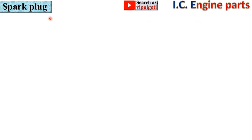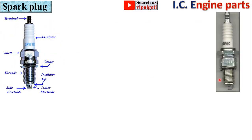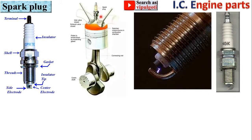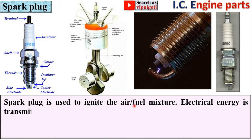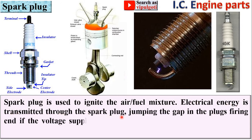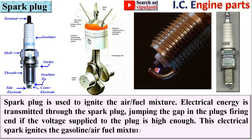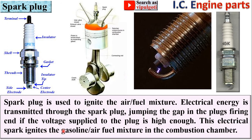Next part: spark plug. This is the image of the spark plug and this figure shows the location of the spark plug in the engine. The spark plug is used to ignite the air-fuel mixture. Electrical energy is transmitted through the spark plug, jumping the gap at the plug's firing end if the voltage supplied is high enough. The high voltage produces a spark in the gap, which ignites the air-fuel mixture.